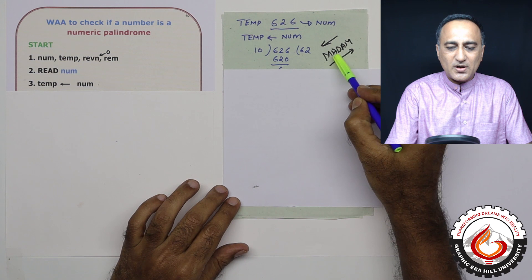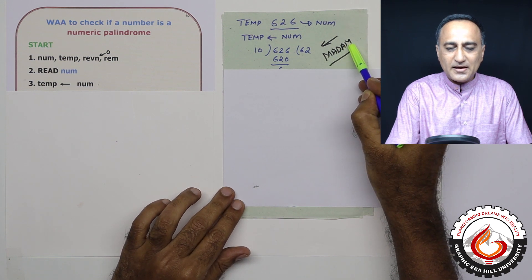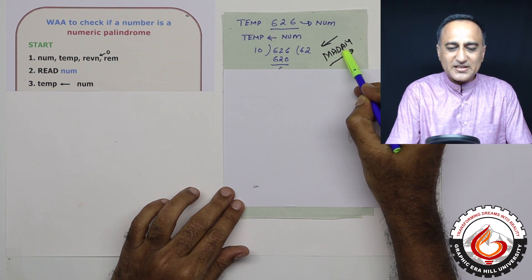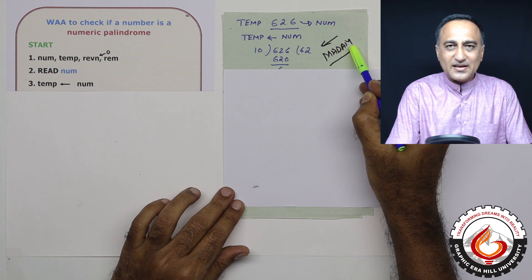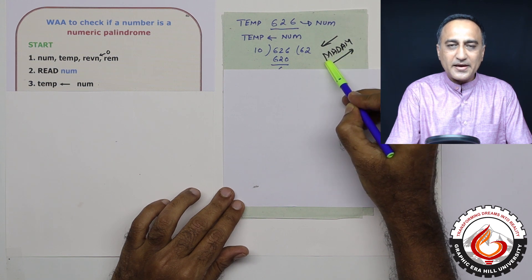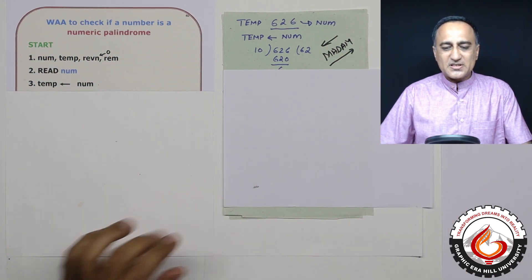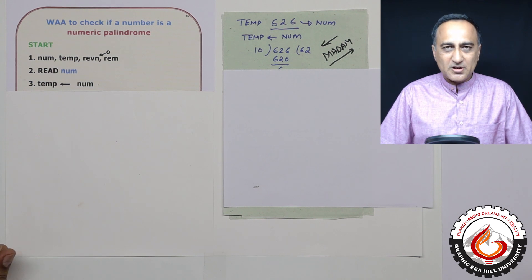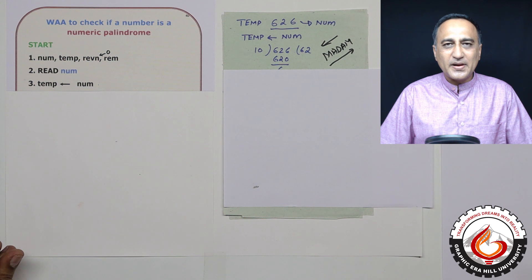Before I talk about numeric palindromes, let me tell you what we understand by the word palindrome. Suppose I have a word like madam. If I reverse it, it still reads the same. Such words are known as palindromes. The most famous example is the English spelling of the language Malayalam.